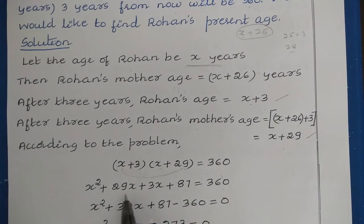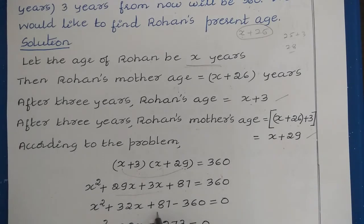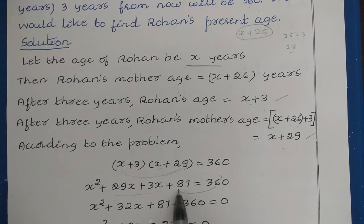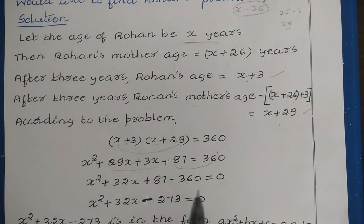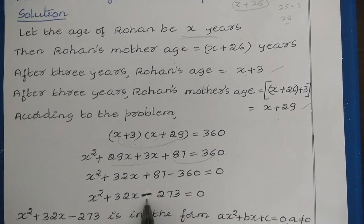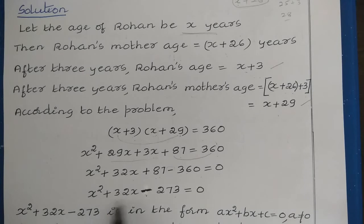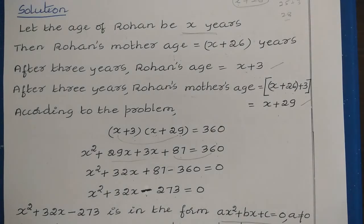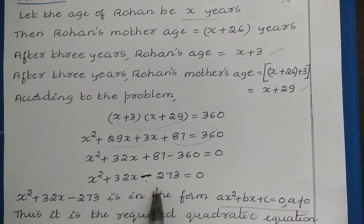Combining like terms: x² + 32x + 87 = 360. Moving 360 to the left-hand side gives x² + 32x + 87 − 360 = 0, which simplifies to x² + 32x − 273 = 0. Comparing with the general form of a quadratic equation, this is the required quadratic equation.